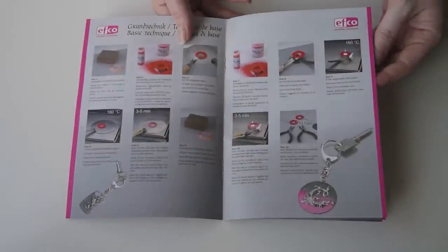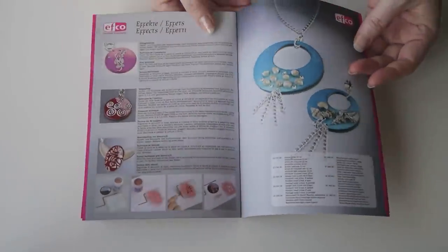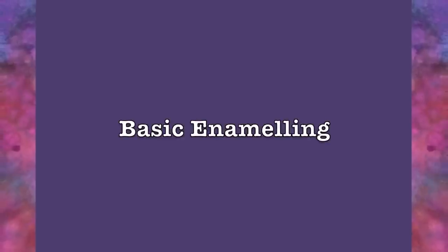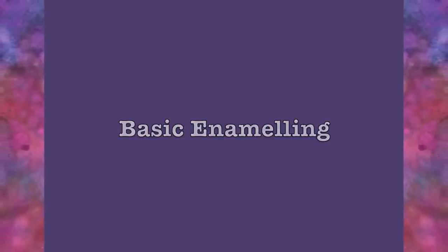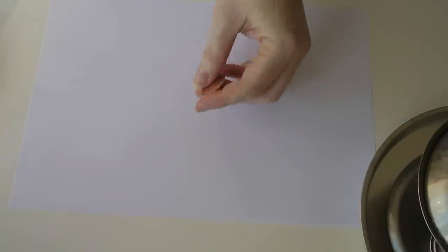The booklet includes instructions on how to enamel as well as some ideas for creating decorative effects. First you need a copper blank. Give that just a light sand with some fine sandpaper. This helps the powder key in.